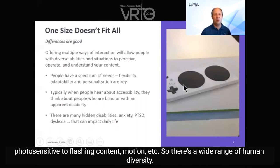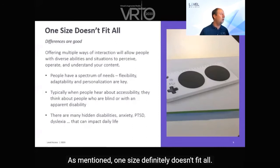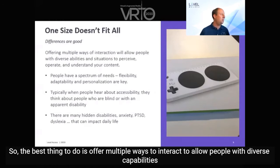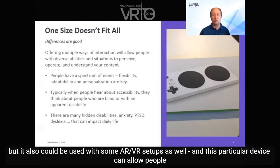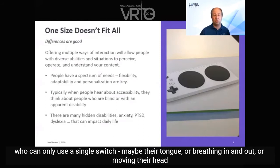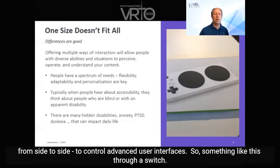So there's a wide range of human diversity, and one size definitely doesn't fit all. The best thing to do is offer multiple ways to interact, to allow people with diverse capabilities to interact in a way that works best for them. I have a picture here of the Xbox Adaptive Controller, which can be used with an Xbox system but also with some AR and VR setups. This device can allow people who can only use a single switch — maybe their tongue, breathing, or head movement — to control advanced user interfaces.